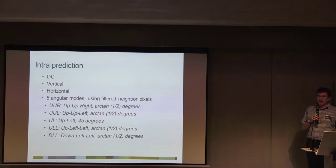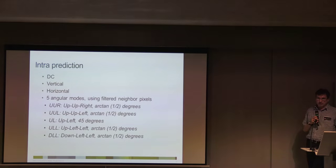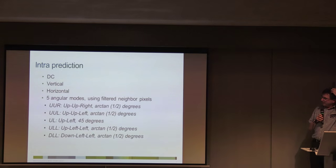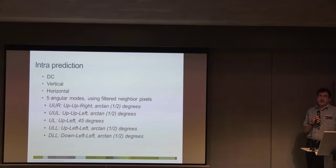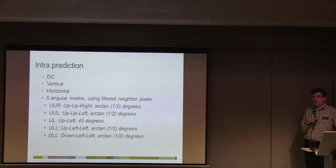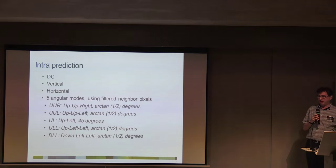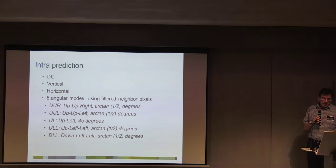On the intra side it's pretty simple. Although we have all these different block sizes, we have a simple set of predictors: DC, vertical, horizontal, and five angular modes. We don't support anything like the 33 angular modes in H.265. Our intra frames are pretty simple, and that reflects the video conferencing heritage of the codec — intra frames are a pain and you want as few as possible. It works pretty well, but it's something we could improve in the future.